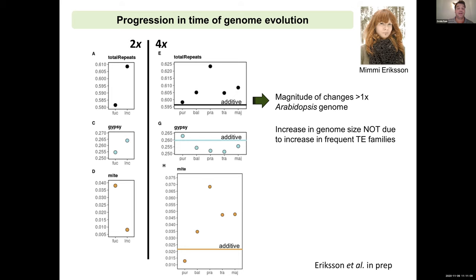When we look at what causes this increase in total number of repeats by comparing frequent elements such as Copia or Gypsy, we observe that this is not due to increasing activity of such elements — if anything, Gypsy and Copia decrease in time. However, Mimi found that a miniature inverted repeat transposable element, the so-called MITE — a group of non-autonomous class II transposable elements — is causing this increase in genome size, departing from additivity.